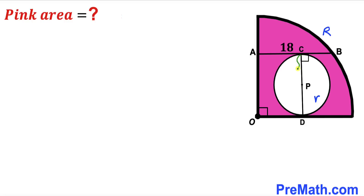We can see that CP is the radius of the smaller circle, so I'll label it as lowercase r. Likewise, PD is also lowercase r. Therefore, the whole diameter CD is going to be 2r.